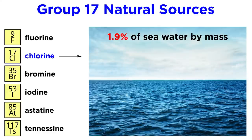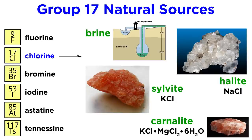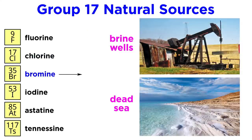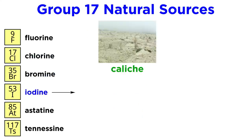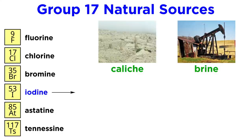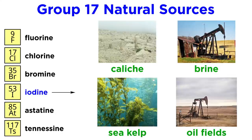Chlorine makes up 1.9% of seawater by mass due to its salinity, and is also found in underground brine wells and the water of the Dead Sea. Iodine is present in certain salts found in Chile, in a layer of soil called caliche, as well as underground brines, sea kelp, and oil fields of Japan and the United States.